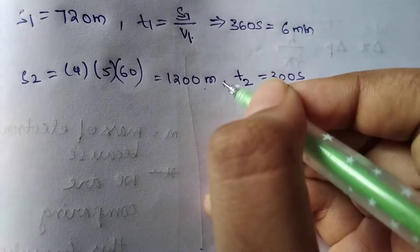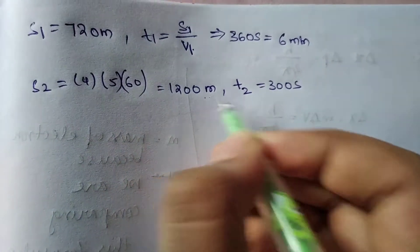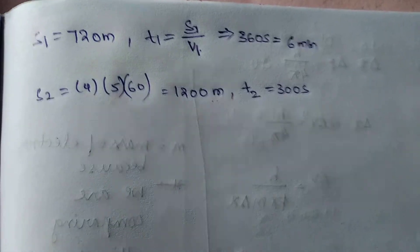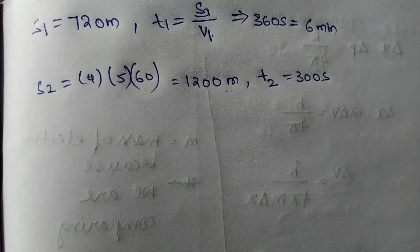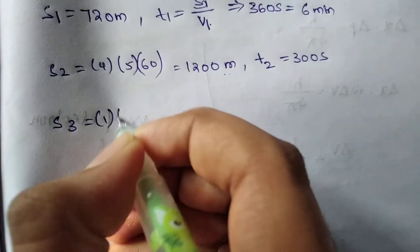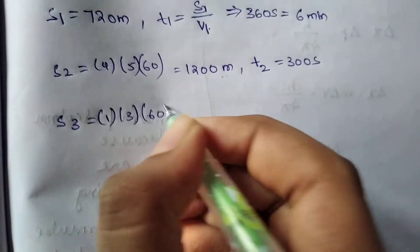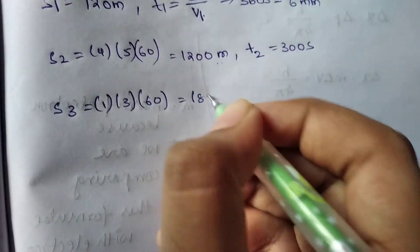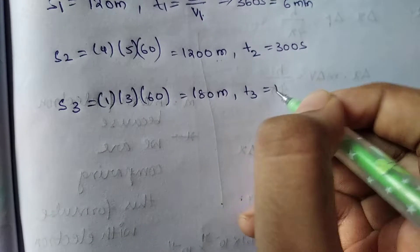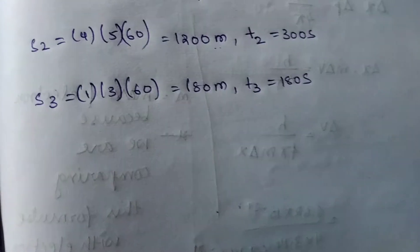Next step: s3 = 1 times 3 times 60, which equals 180 meters. Now t3 equals 180 seconds, which equals 3 minutes.